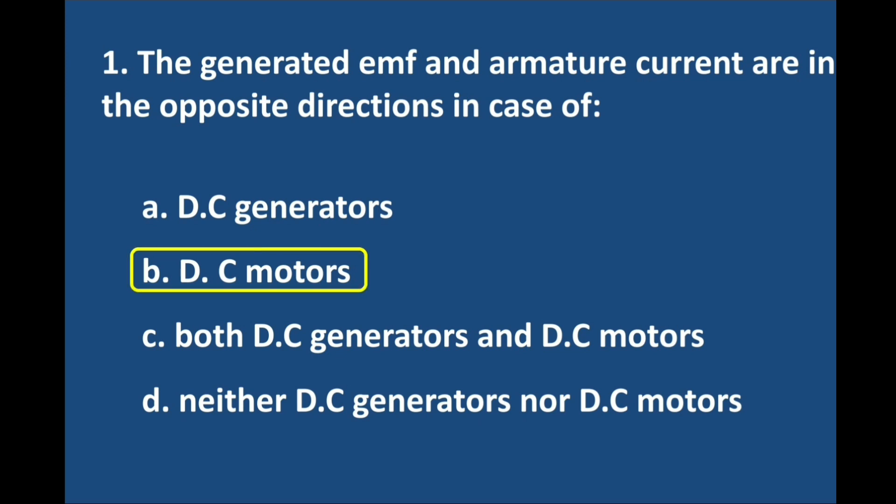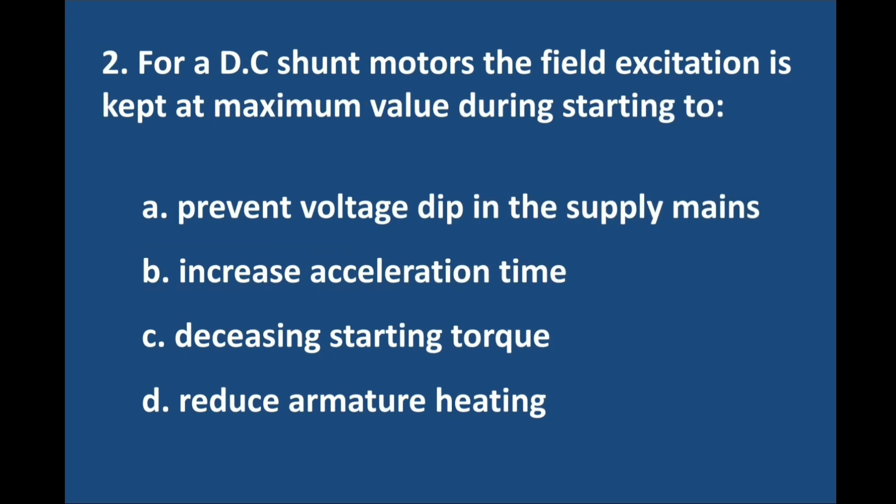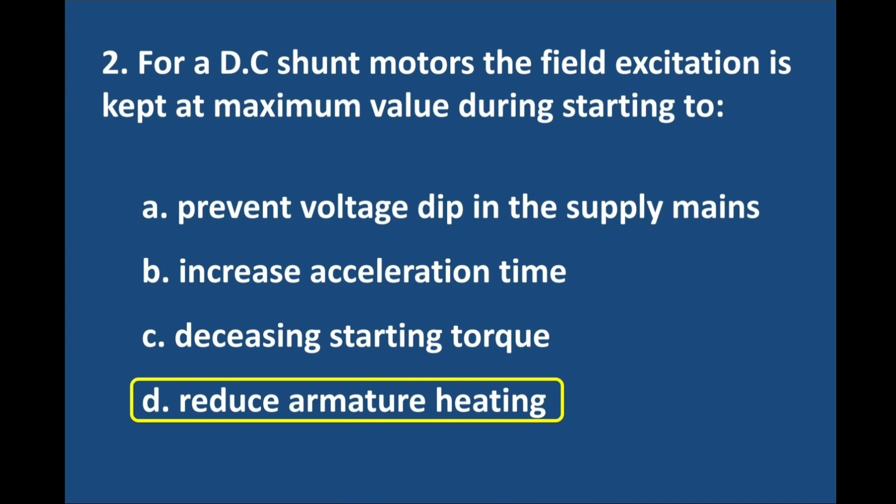Question number 2. For a DC shunt motor, the field excitation is kept at maximum value during starting. Answer is option D: Reduce armature heating.